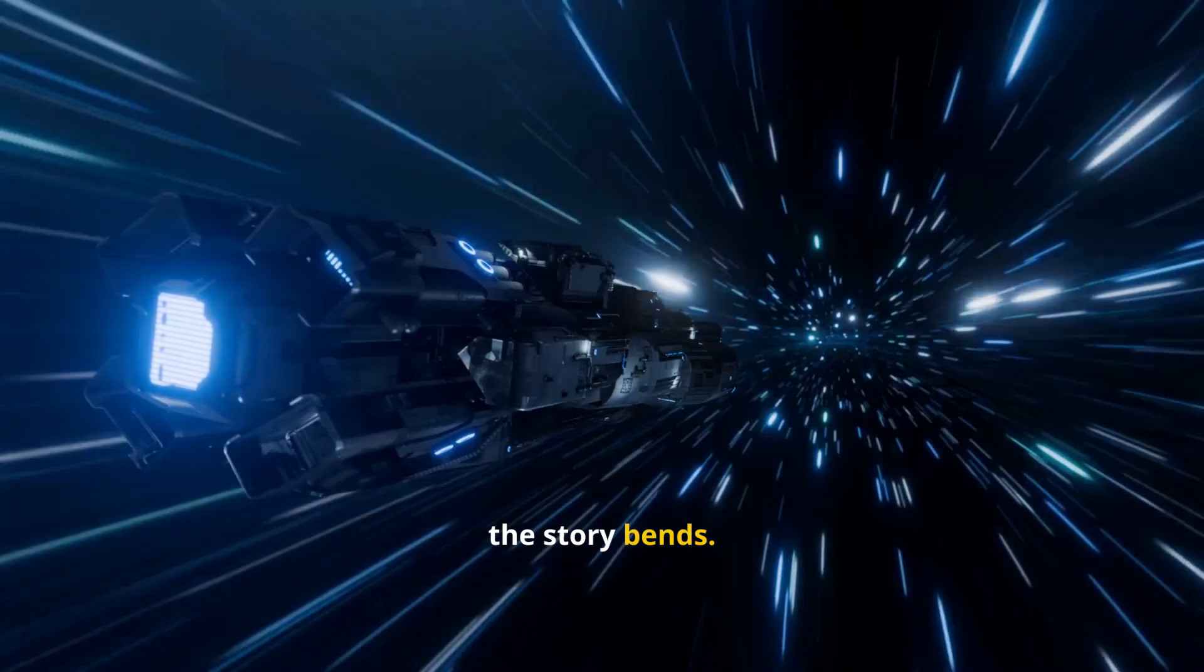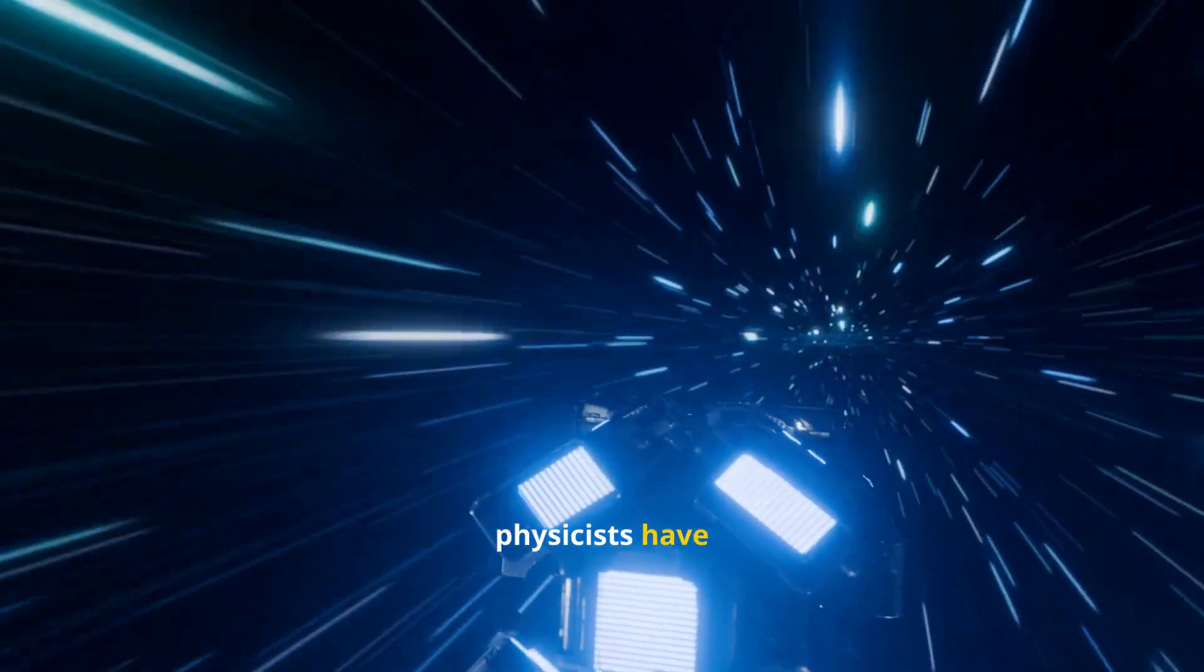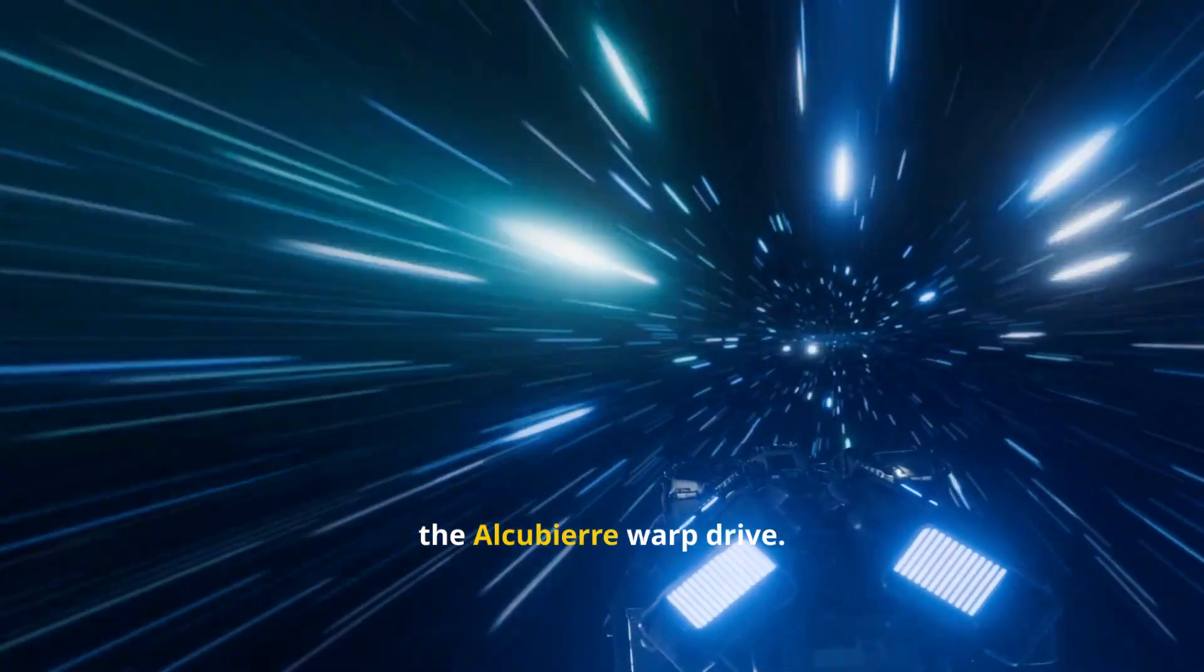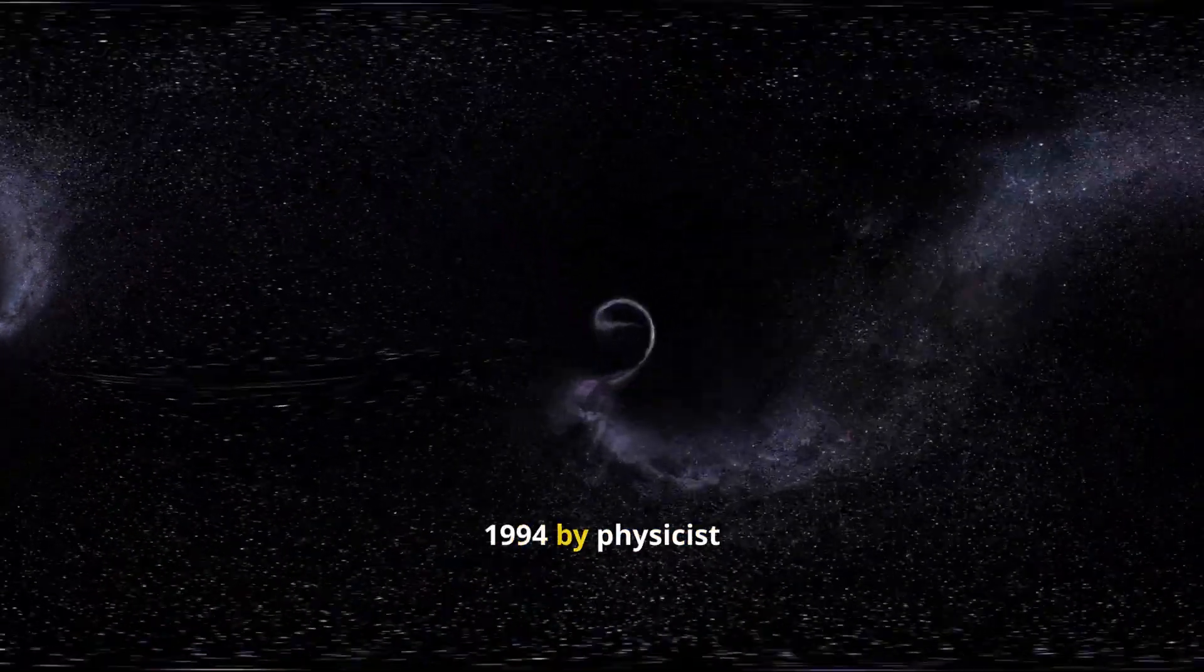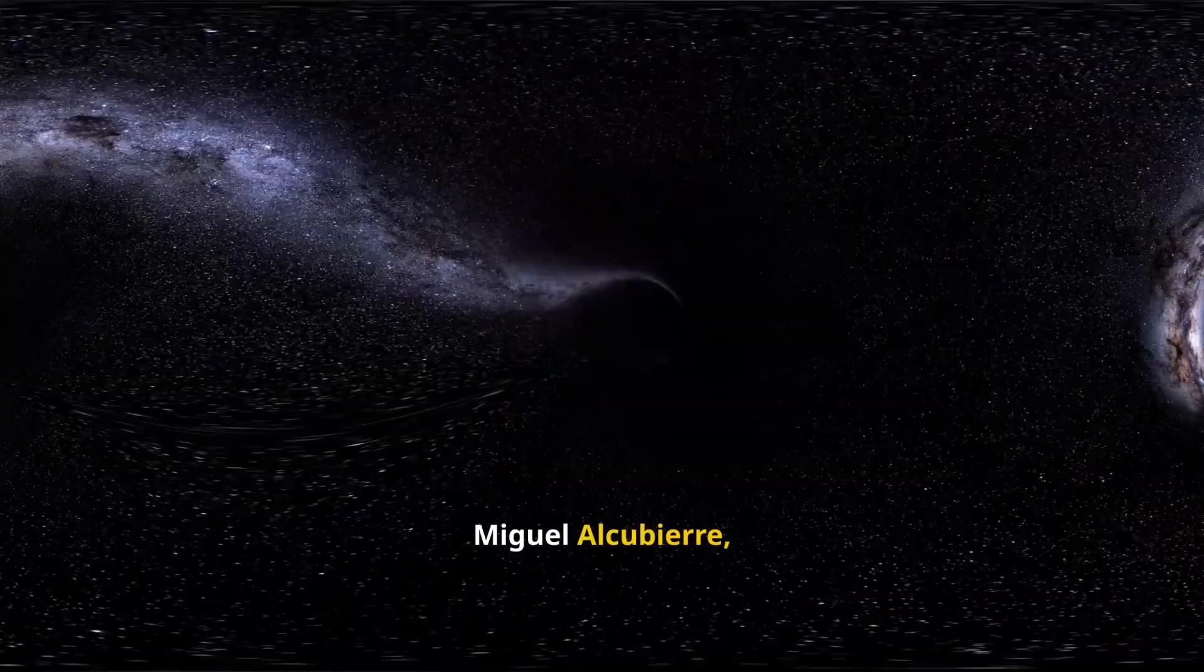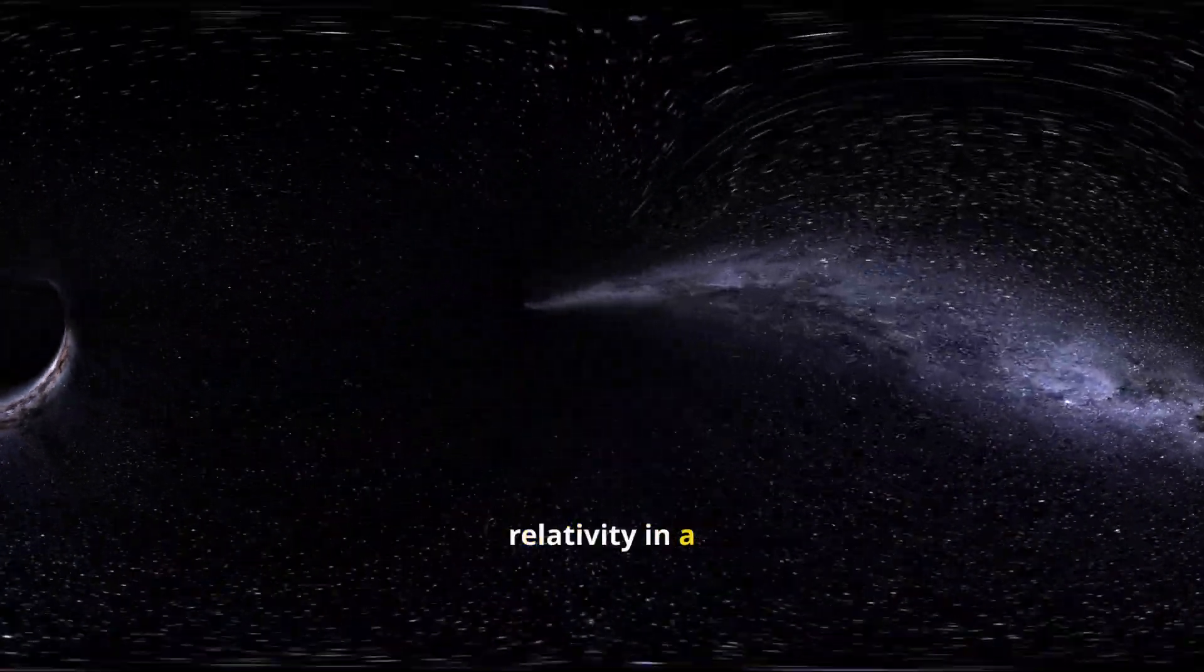And this is where the story bends. Because while generation ships embrace the long road, physicists have imagined a shortcut: the Alcubierre warp drive. First proposed in 1994 by physicist Miguel Alcubierre, this concept uses Einstein's equations of general relativity in a radical way.